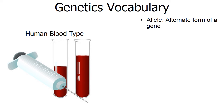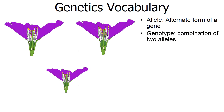For human blood type, there are actually three alleles: you might have an A allele, a B allele, or an O allele, and the combination of alleles we inherit determines our blood type. Alleles make up our genotype. We have two parents, so we get one allele from mom and one allele from dad. The combination of those two alleles determines our genotype.